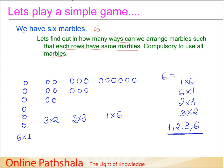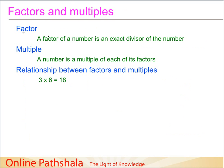A factor of a number is an exact divisor of that number. When I say exact divisor, it means that when you divide a number by its factor, the remainder is always zero. A number is a multiple of each of its factors.